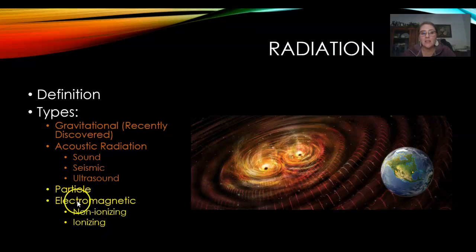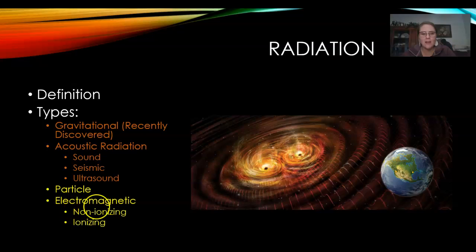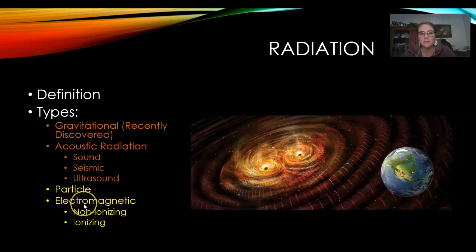The other two types of radiation that we're going to talk a lot more about in this presentation are particle radiation and electromagnetic radiation. I put ionizing and non-ionizing right here, but those really shouldn't be under electromagnetic — sorry about that. You don't have to write them down. Just write down this orange stuff, because those are some of the types, and then we're going to talk about these in more detail.